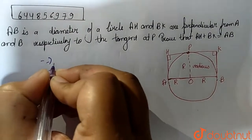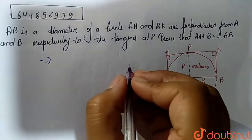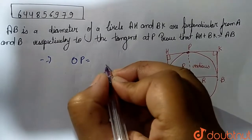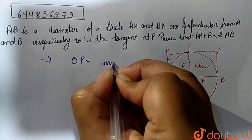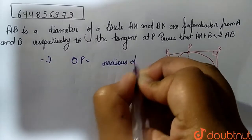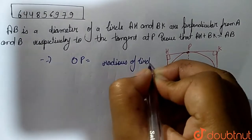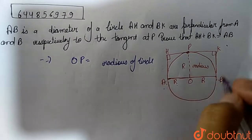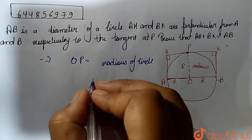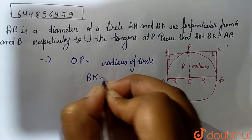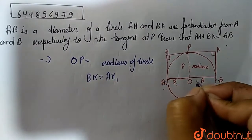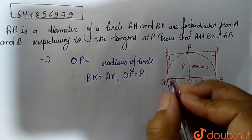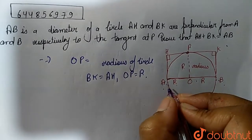As we can see in the given figure, OP is the radius of the circle. Also, BK and AH are equal to each other, so BK = AH. Since OP is the radius, we can say OP = r.